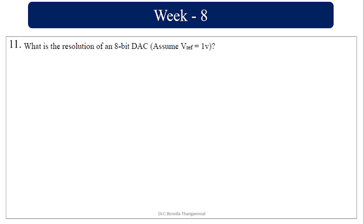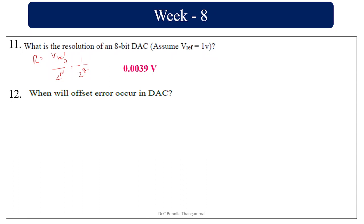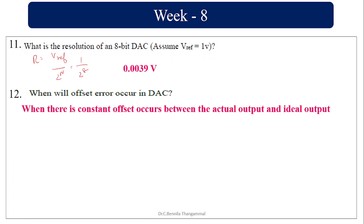Flash type has higher resolution compared to dual slope — that is also wrong. What is the resolution of an 8-bit DAC? The formula is V_reference divided by 2^N, where N is the number of bits. So it is 1 / 2^8 = 1/256, which equals approximately 0.0039 volts.